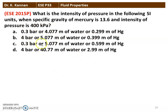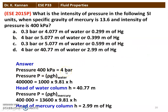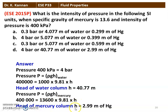400 kPa equals 4 bar. Among the options, only option B and option D include 4 bar, so the answer is one of those two. Using P = ρgH for water: 4 × 10⁵ = 1000 × 9.81 × H, giving H = 40.77 m of water column. For mercury: 4 × 10⁵ = 13600 × 9.81 × H, giving H = 2.99 m of mercury column. So the correct answer is option D: 400 kPa = 4 bar = 40.77 m of water = 2.99 m of mercury.